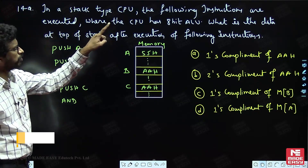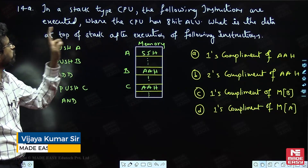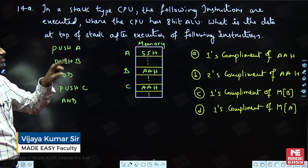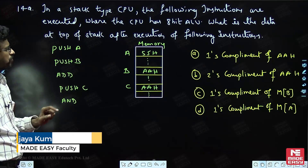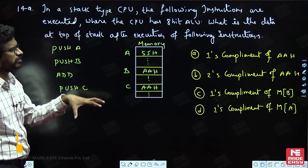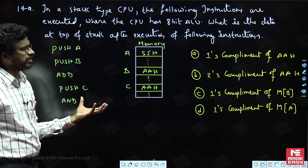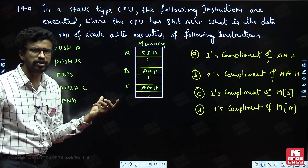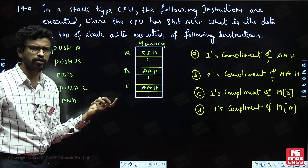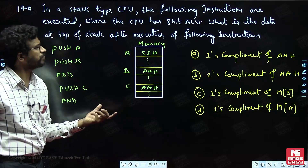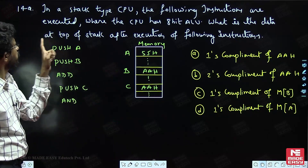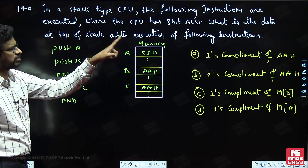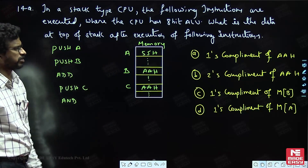In a stack type CPU, the following instructions are executed where the CPU has an 8-bit ALU, meaning it can perform 8-bit arithmetic and logical operations. What is the data at the top of the stack after execution of the following instructions?